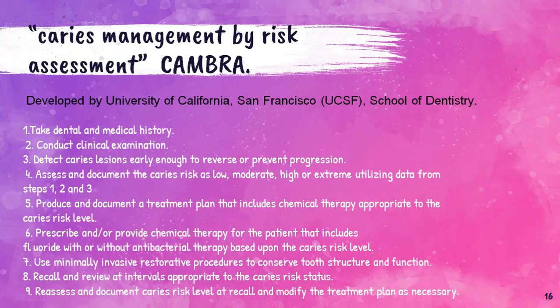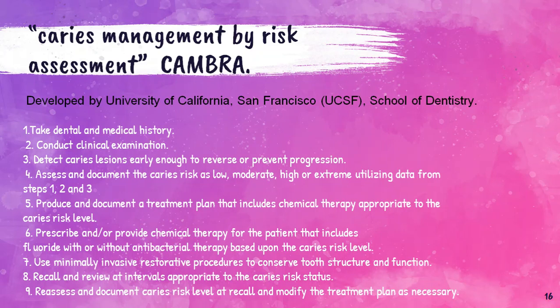In Caries Management by Risk Assessment (CAMBRA), the dental and medical history is taken, a clinical examination is conducted, caries lesions are assessed and documented, and caries risk is categorized as low, medium, high, or extreme. This information is used for preparing a treatment plan that includes chemical therapy appropriate to the caries risk level. The recall and review intervals are appropriate to the clinical caries risk status — a shorter recall period is planned for individuals of high caries risk compared to those of low caries risk.